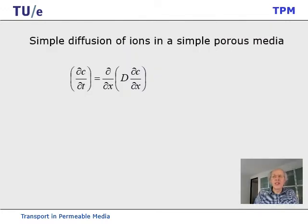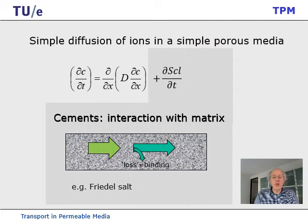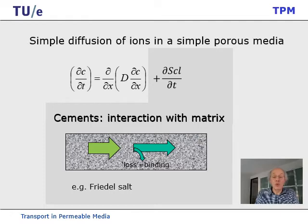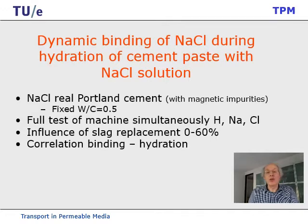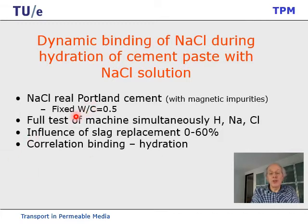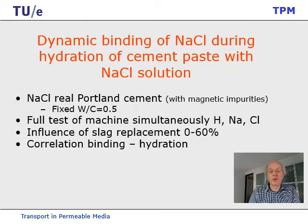This is a simple porous medium. But if we do the same in cement, we also have a sink, as ions are taken out of the solution and interact with the matrix — for example, Friedel's salt being formed. So we would like to have more information about this dynamic binding. In order to do so, we looked at the binding of sodium chloride during cement hydration for various sodium chloride solutions, using ordinary Portland cement with a water-cement ratio of 0.5. We measured hydrogen, sodium, and chloride, with slag replacement varying between 0 and 60%, looking for a correlation between binding and hydration.